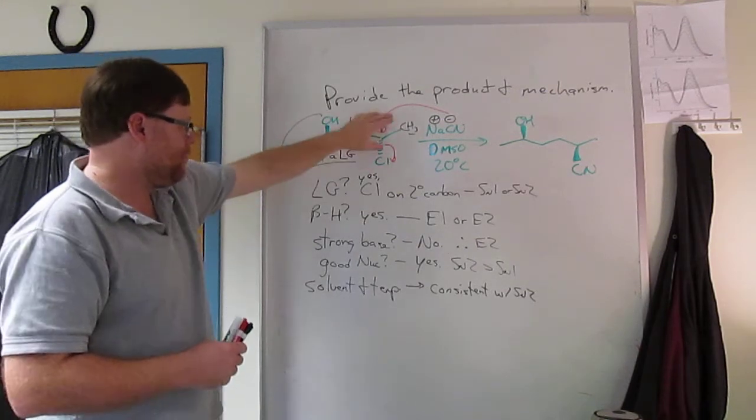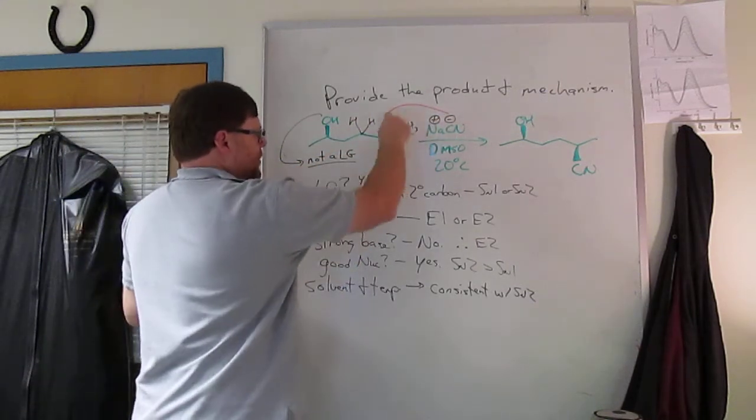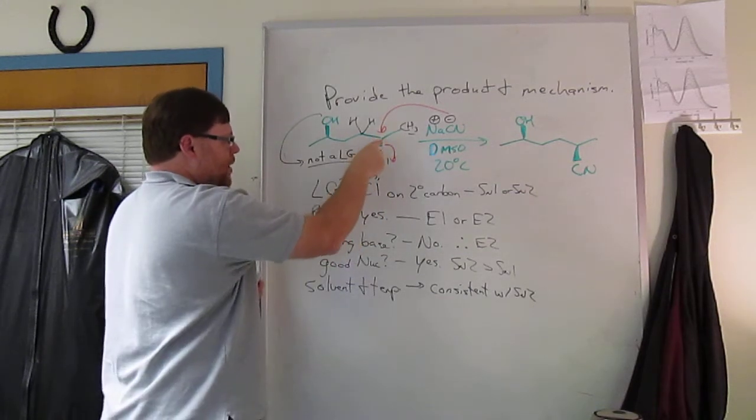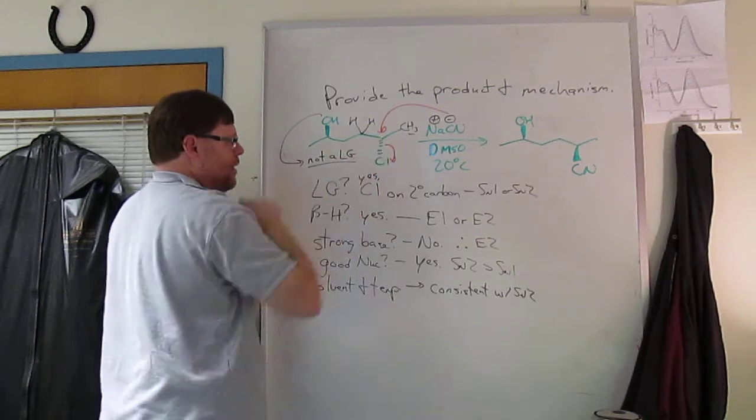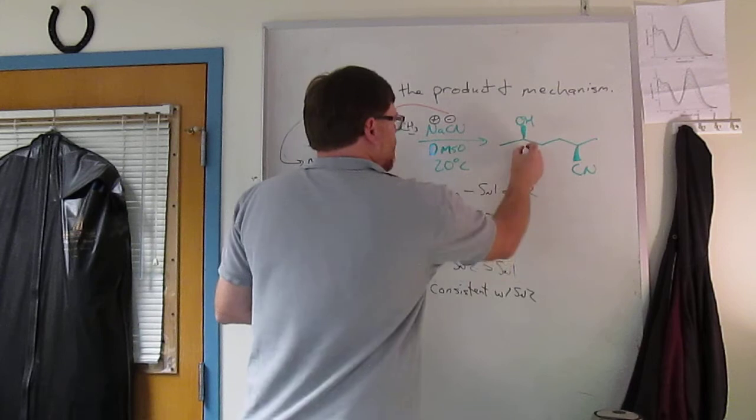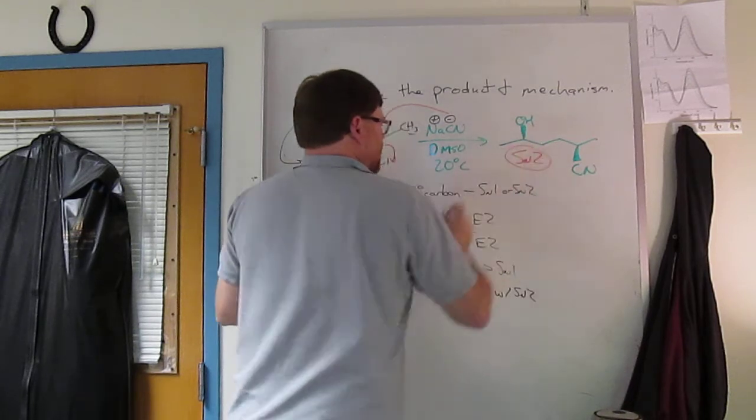So nothing happens to, look at the mechanism. Arrow from the cyanide to that carbon, arrow from the chloride off. So the only chemical changes in the molecule will be on that carbon. All right. So this is our product and it's the result of an SN2 reaction.